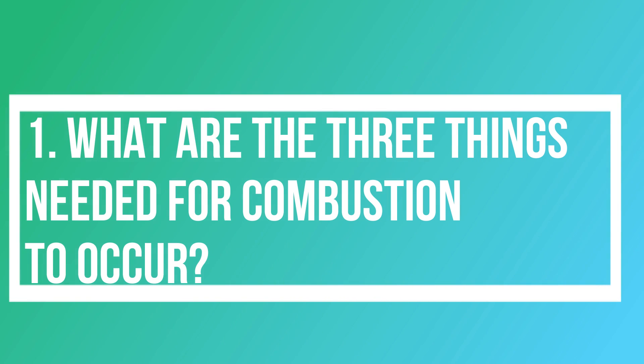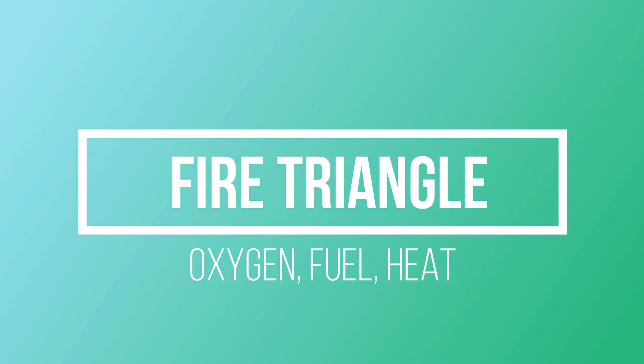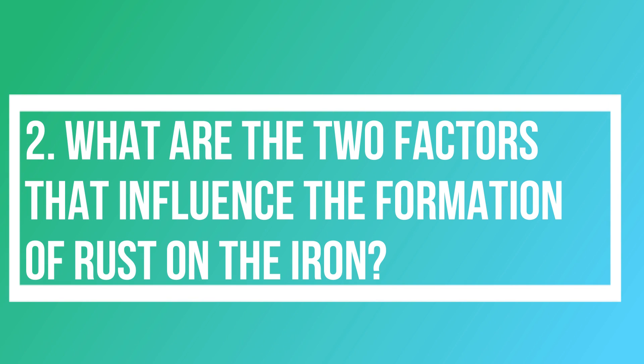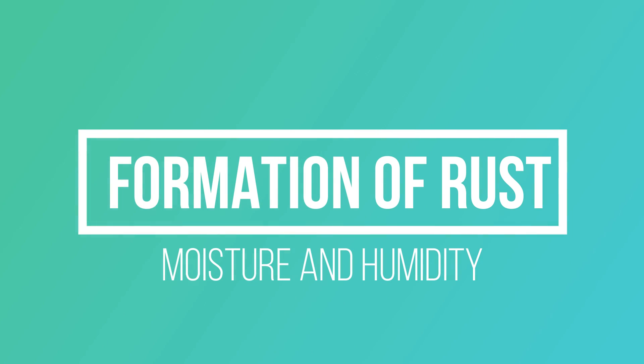Let's sum it up to see how far you understand the lesson. What are the three things needed for combustion to occur? Correct! For combustion to occur, it needs oxygen, fuel, and heat. What are the two factors that influence the formation of rust on iron? You said it correctly — the two factors are the moisture and humidity of the surroundings.